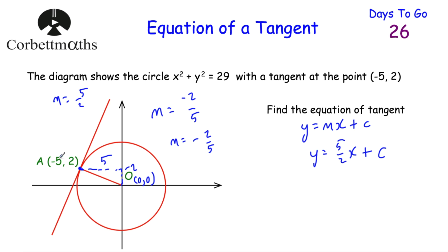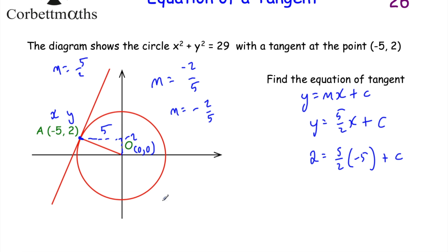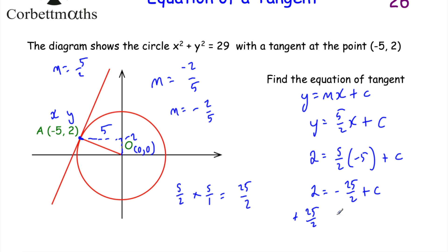The tangent passes through the point (−5, 2). Substituting in: y is 2, so 2 equals 5 over 2 multiplied by negative 5 plus c. Working out 5 over 2 times negative 5: that's negative 25 halves. So we have 2 equals negative 25 halves plus c. Adding 25 halves to both sides: 2 plus 25 halves. Since 25 divided by 2 is 12.5, you could say we're adding 12.5 to both sides, giving 14.5.